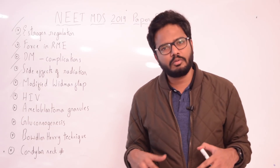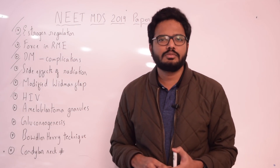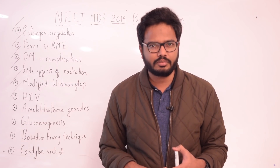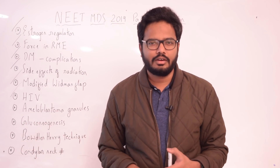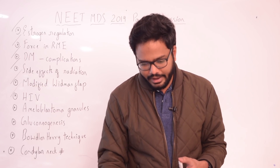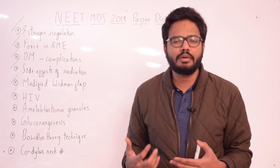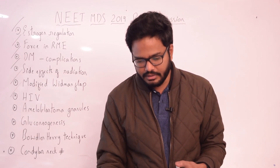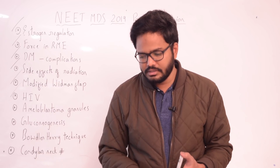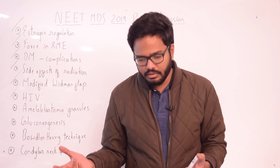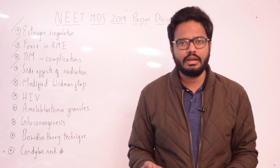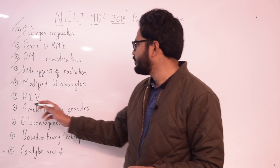ANUG can be seen in immunocompromised situations, but it has been 40 to 50 years since a case of ANUG has been documented in literature, due to the use of antibiotics. ANUG is caused by mixed bacterial infections including anaerobes, especially spirochetes like Treponema, Fusobacterium, and Prevotella intermedia. Therefore, ANUG would be the more appropriate answer in this context.